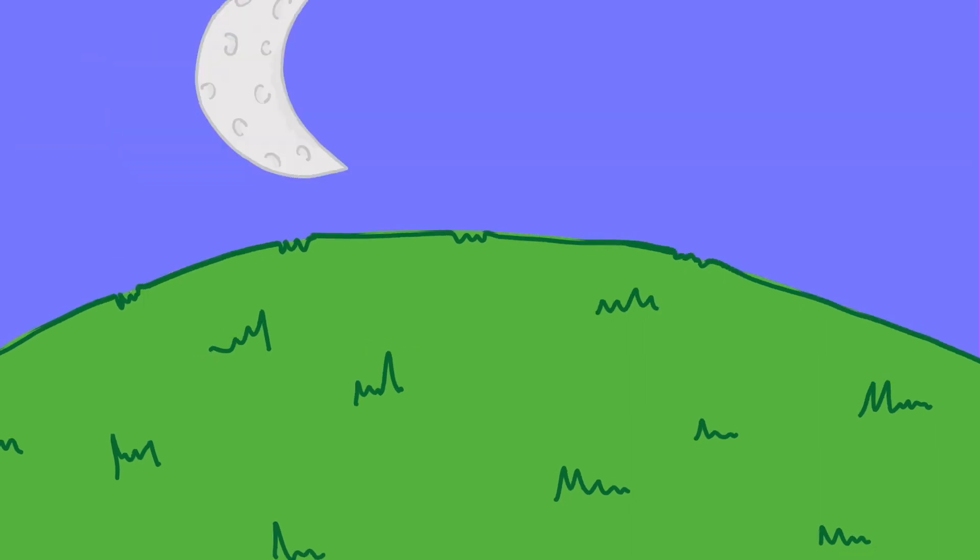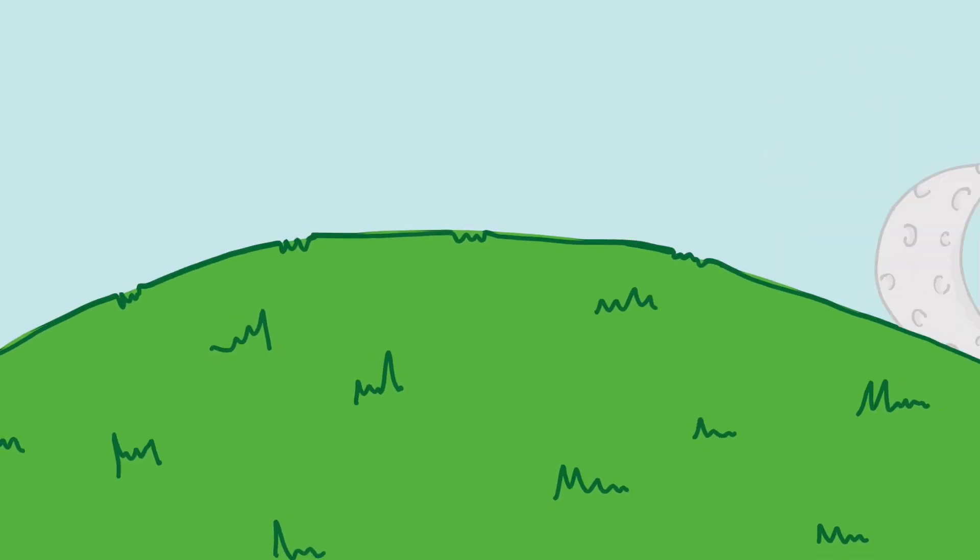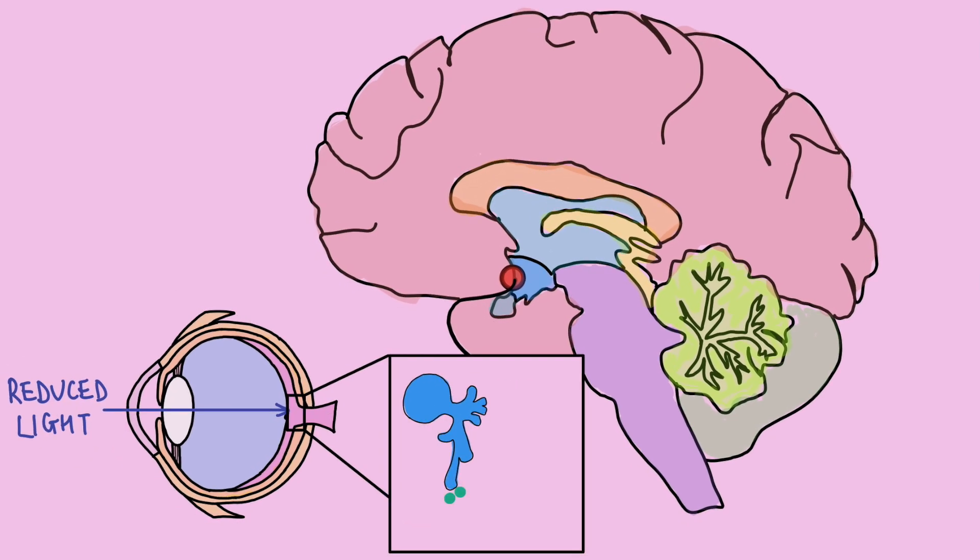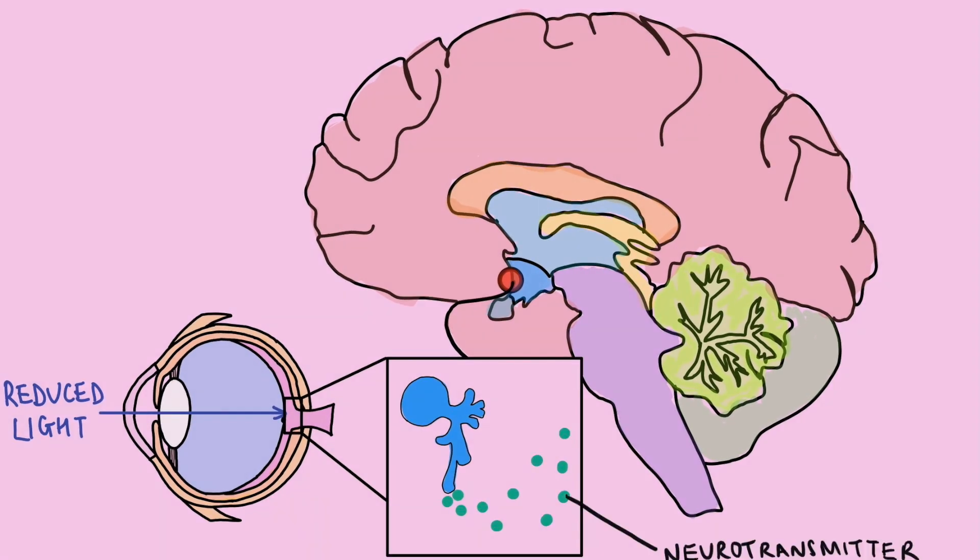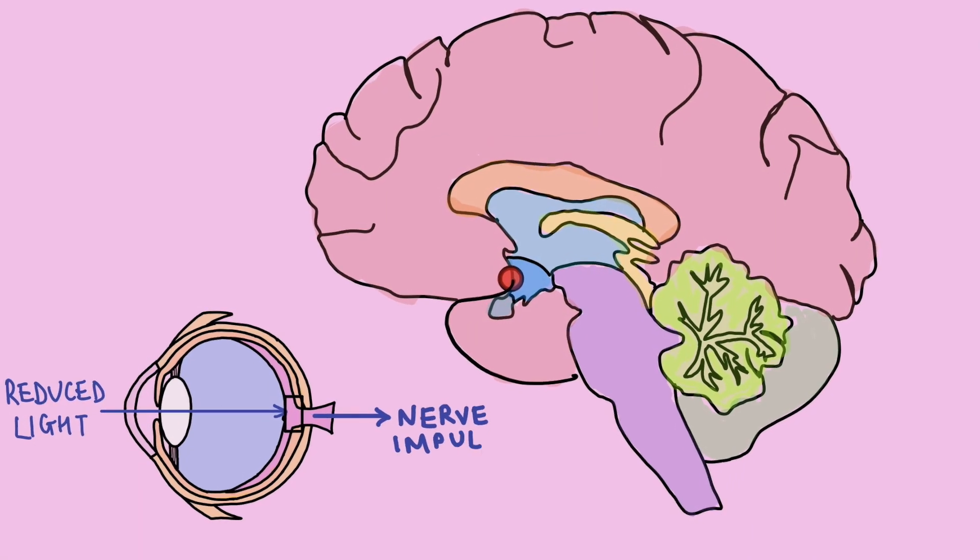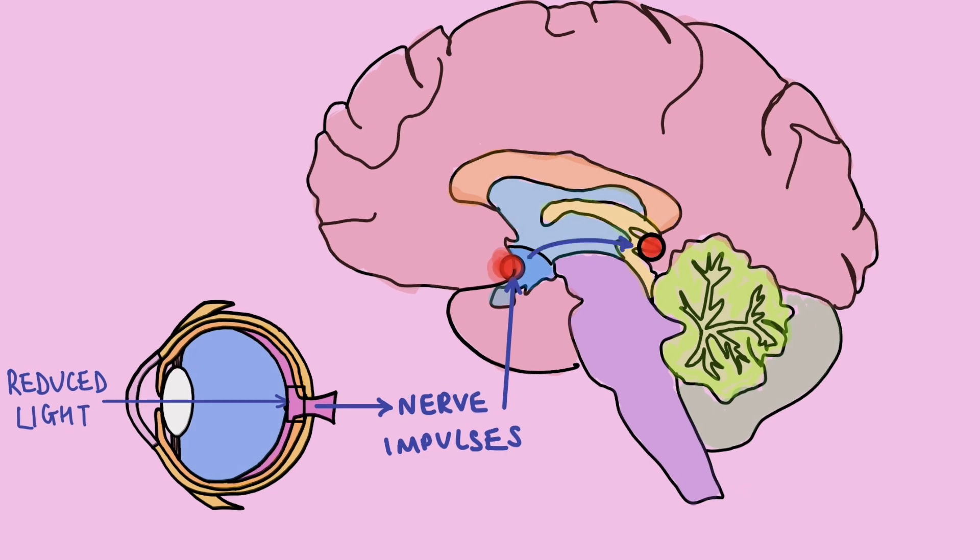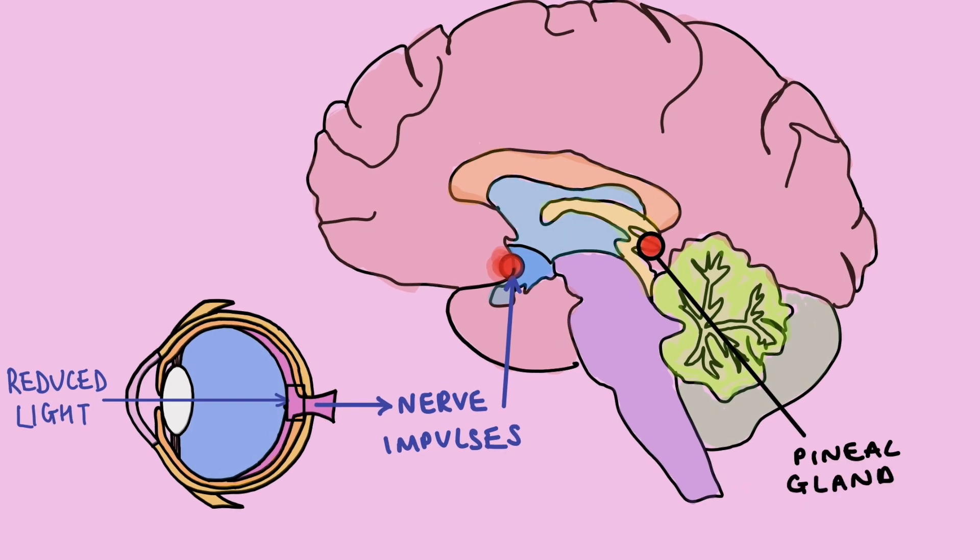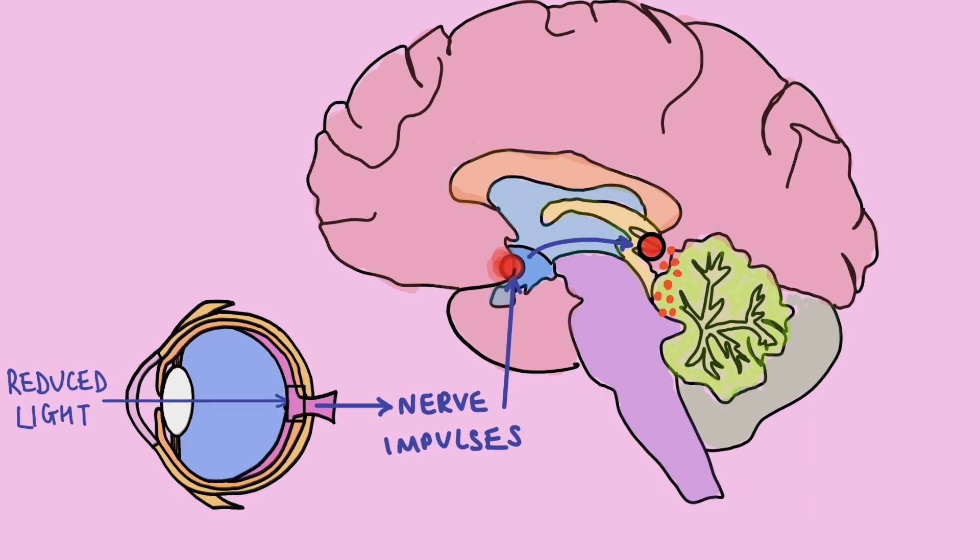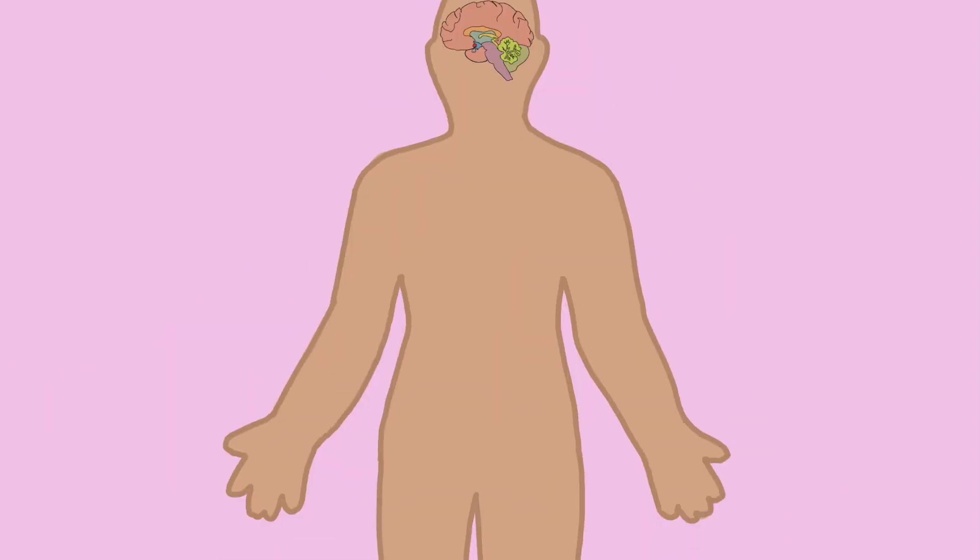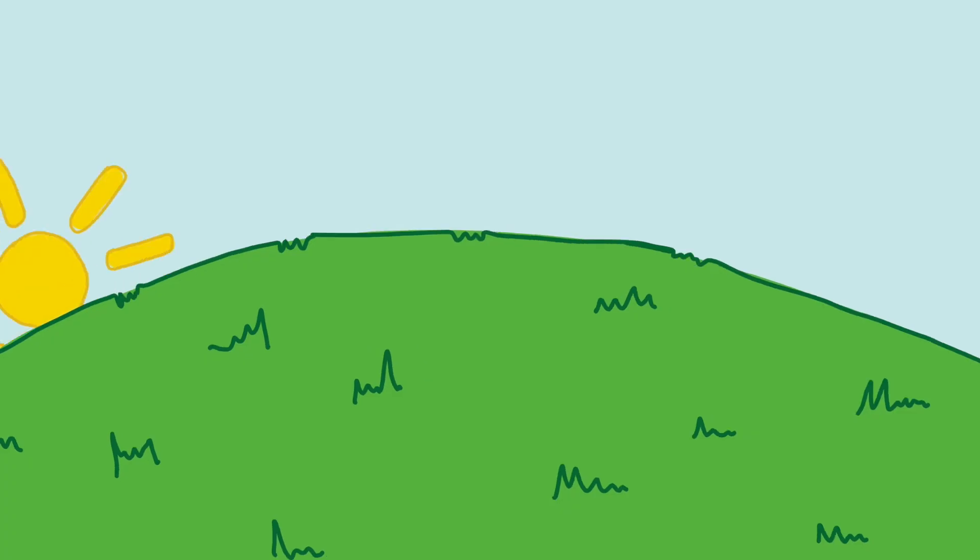At night when the environment is darker, the decrease in light is detected by photosensitive retinal ganglion cells. This causes the release of a signal molecule called neurotransmitter which produces nerve impulses that target the body's clock in the brain. This can signal to the pineal gland here to release melatonin. Melatonin targets other smaller clocks around your body and signals to them to make you feel tired.